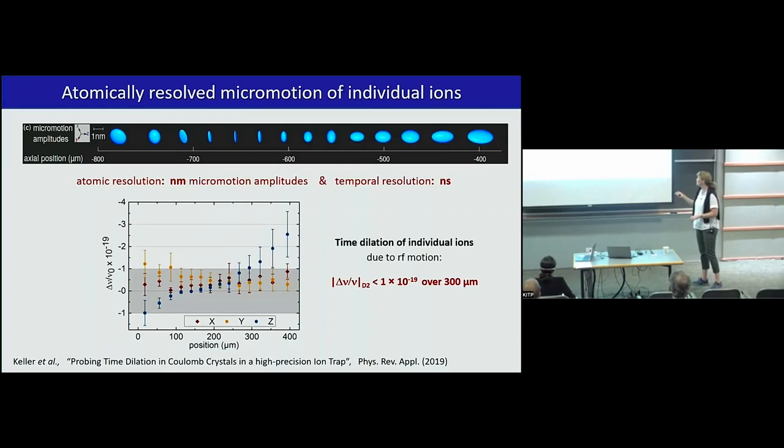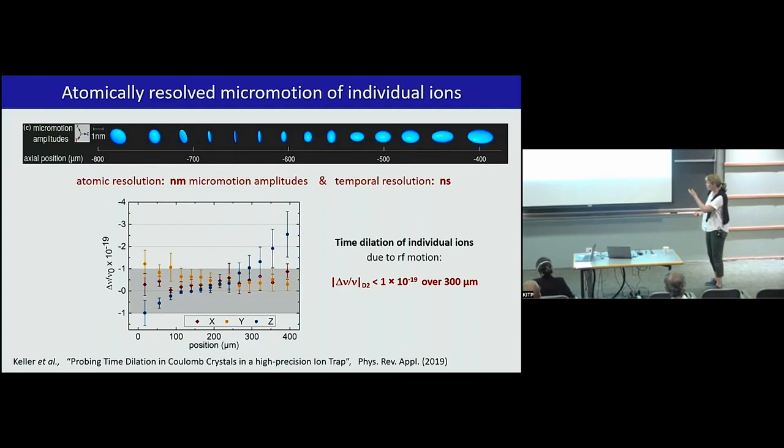This will sound now disappointing for you, because the time dilation in our ion trap over 400 micrometer scale is below 10 to minus 19. But if you take a regular trap, actually it can be 10 to minus 17 over just 5 micrometer. If you just buy a simple blade trap, you have orders of magnitude larger time dilation inhomogeneities. So that was for us a very important benchmark in 2019.